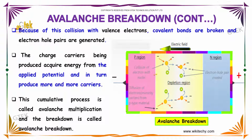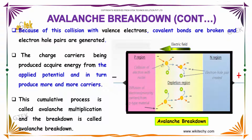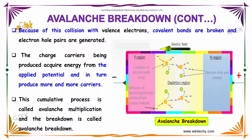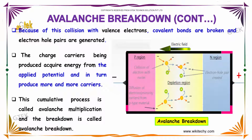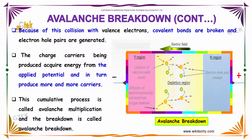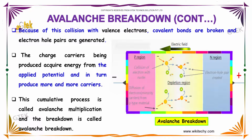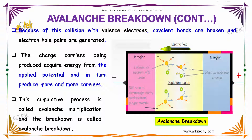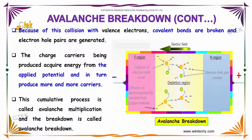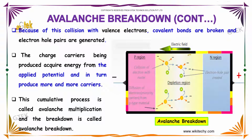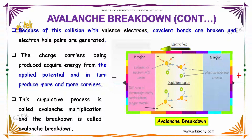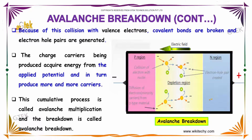Because of this collision with the valence electrons, the covalent bonds are broken and electron-hole pairs are generated. The charge carriers being produced acquire energy from the applied potential and tend to produce more and more carriers.